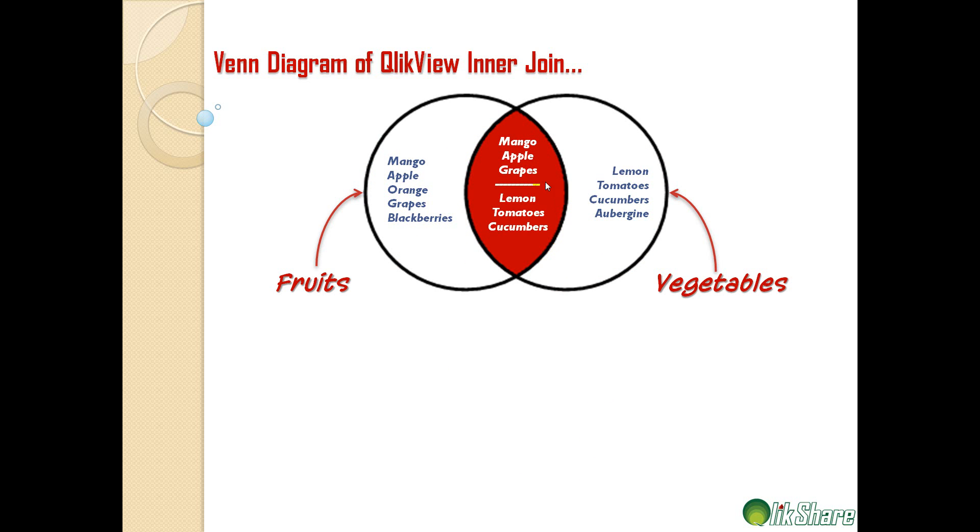The inner join would return mango, apple, grapes, lemon, tomatoes, and cucumbers. The reason for that is colors is our join predicate, and the three colors which are common between fruits and vegetables are yellow, red, and green.